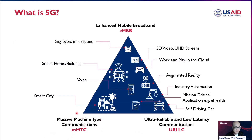Next is MMTC — Massive Machine Type Communications. Massive Machine Type means millions of devices connected to the network. In simpler terms, that is what we call Massive IoT, or the Internet of Things. 5G has the capability to connect up to 1 million devices per square kilometer — that's how many devices can be connected to the network when using a 5G standalone network.